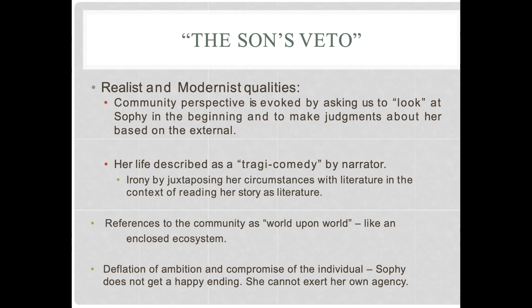You also see some regular qualities of realism, like the deflation of ambition and the compromise of the individual. Sophie does not get her happy ending. She can't exert her own agency. It's not her compromising her individual self into a marriage that is the happily ever after — that's the midpoint of the story. We learn it was really not a happy situation for her, and that she tries to escape by telling Sam she wants to marry him, pleading with her son. But that doesn't happen for her — she doesn't have enough agency to escape her circumstances.